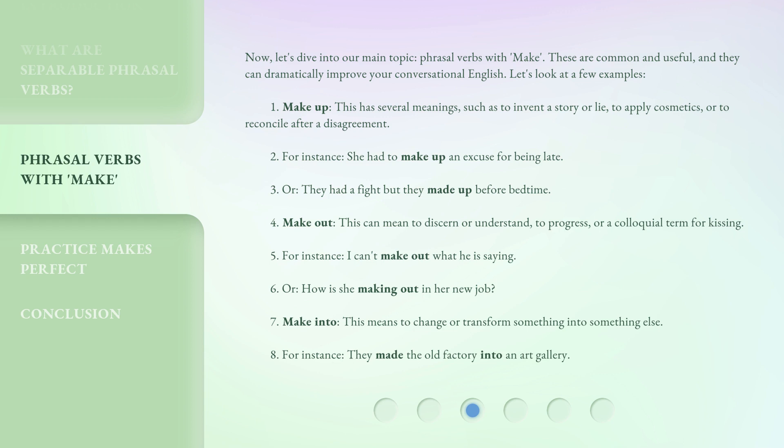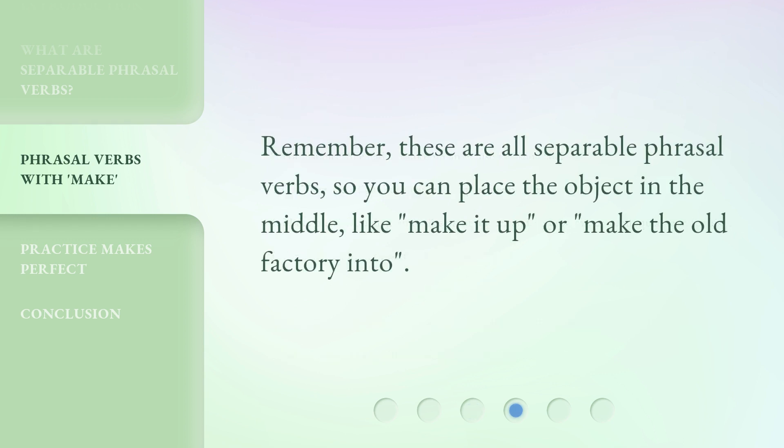Make into. This means to change or transform something into something else. For instance: 'They made the old factory into an art gallery.' Remember, these are all separable phrasal verbs, so you can place the object in the middle — like 'make it up' or 'make the old factory into.'